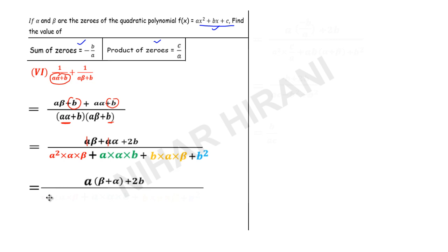Here I will substitute the value. Now let us further simplify. So here a into bracket, this is sum of zeros. Beta plus alpha is same as alpha plus beta, commutative property. So sum of zeros minus b upon a plus 2b in the denominator.